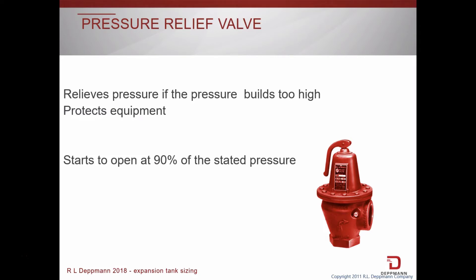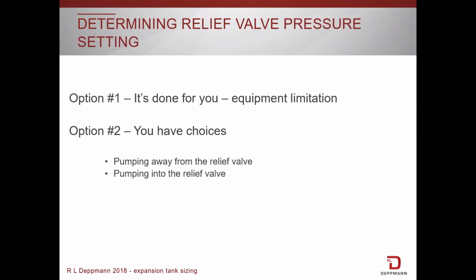Now the question is, what pressure setting do we need? The setting is determined one of two ways. First, it's given to you. The relief valve on some boilers have one or two options. You might see this on smaller residential type boilers that are traditionally set at 30 psi. The second is your given choices.